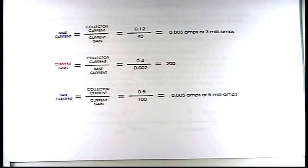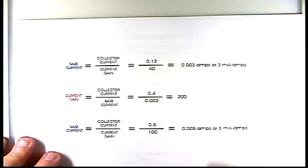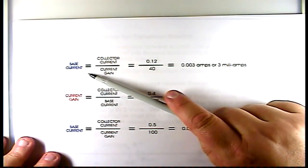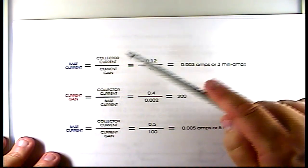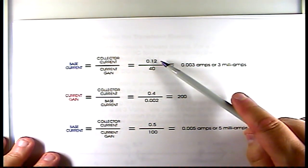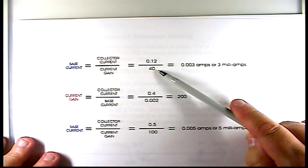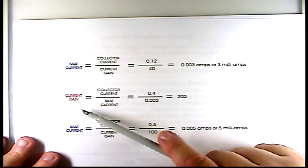In some real world examples, let's say we want to find base current. Base current is found by collector current over current gain. In this case, the collector current would be 0.12, divided by 40, which is the current gain of the transistor, and that would equal 0.003 amps, or 3 milliamps.